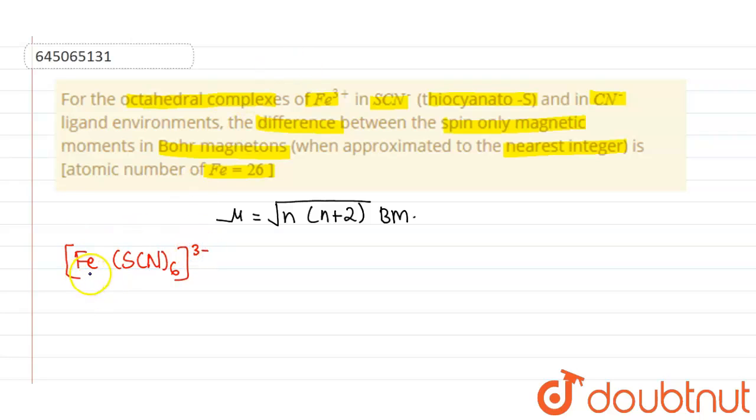If we see Fe, we need to calculate the oxidation states: x minus 1 times 6 equals minus 3, so the value of x is plus 3. This is the correct complex and we need to discuss about it.